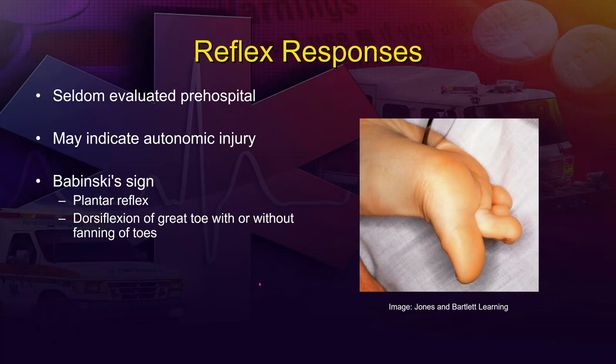The Babinski reflex is generally absent in adults unless there is a central nervous system injury. Normally, if you run an object from the heel up toward the big toe, the adult's big toe will curl inward. A positive Babinski sign is present when, after the same stimulus, the big toe extends upward and backward — called dorsiflexion. This positive Babinski sign indicates that the patient likely has central nervous system trauma.